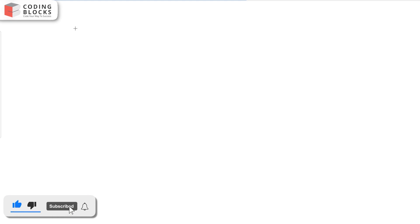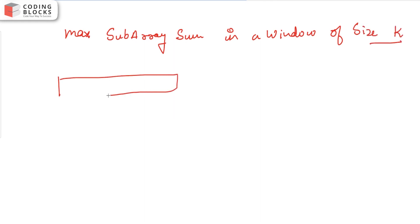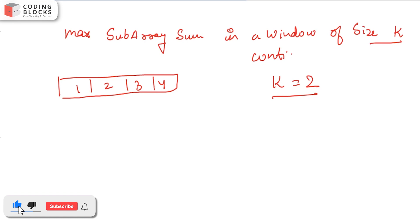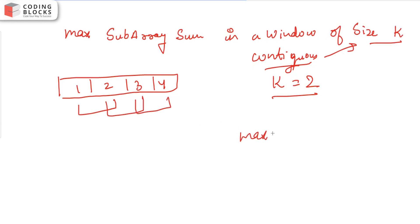For the first problem, let's say we need to find the maximum subarray sum in a window of size k. For example, given the array [1, 2, 3, 4] and k equals 2, for each contiguous window of size k we find the sum, then take the maximum of all sums and return that as our answer.